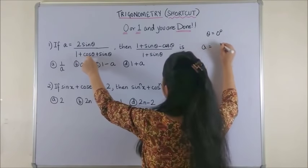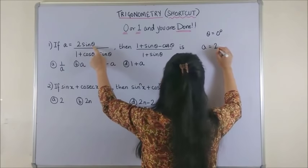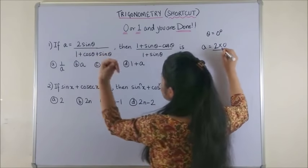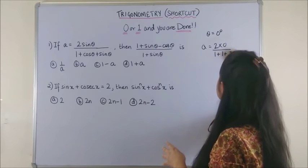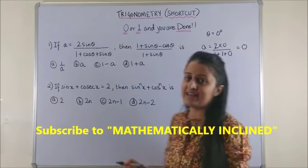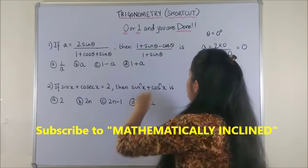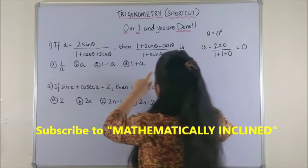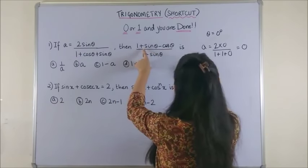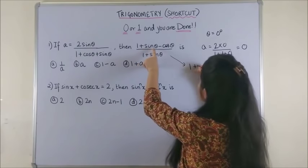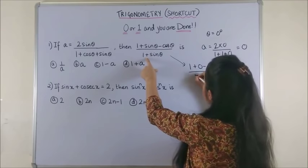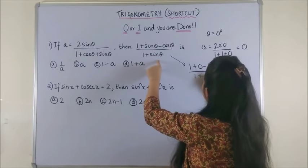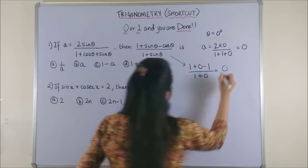That makes my A as 2sin0, that's a 0 upon whatever defined. So, this will be 1 plus cos0 plus sin0. Basically my A is 0. Once I take my A to be 0, let's check what this expression gives us. So, 1 plus sin0 is 0 minus cos0 is 1 upon 1 plus sin0. Ultimately I get a 0 again.